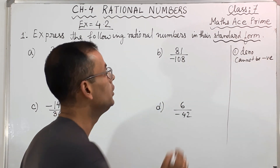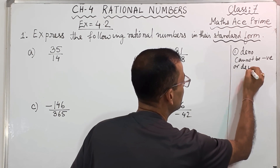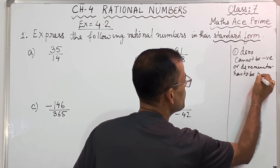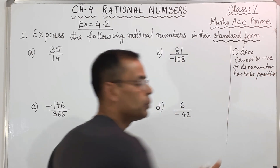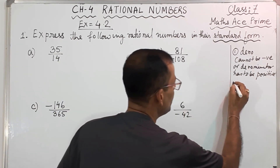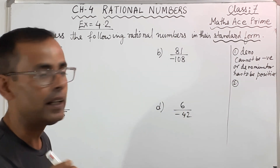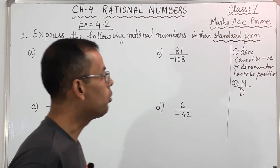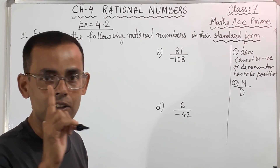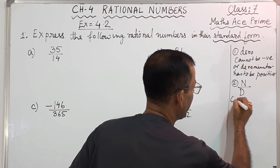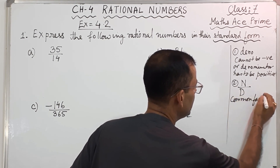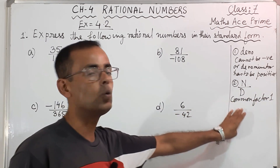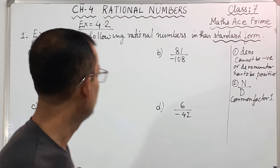The denominator cannot be negative — we can say the denominator has to be positive. It cannot be negative; it has to be positive. And the second one is: both the numerator and denominator — numerator upside, denominator downside — both should have only one common factor, that is 1. The common factor will be 1; other than 1, there will be no other common factor.